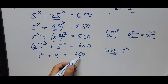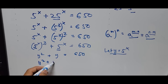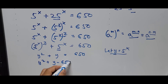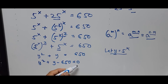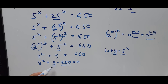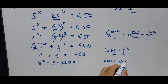Transposing 650 to the left side of the equation gives us y squared plus y minus 650 equals 0. Now we focus on this quadratic equation. The middle term is y, and we need factors of 650. The factors of 650 that work here are 25 and 26.